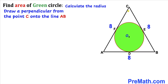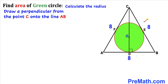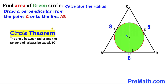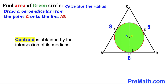Let's draw a perpendicular from point C onto line AB, as you can see in the next diagram. Recall the circle theorem: the angle between the radius and the tangent will always be 90 degrees. This is our 90-degree angle and this is our radius R. The center of this circle O is called the centroid, and this line CD is called the median.